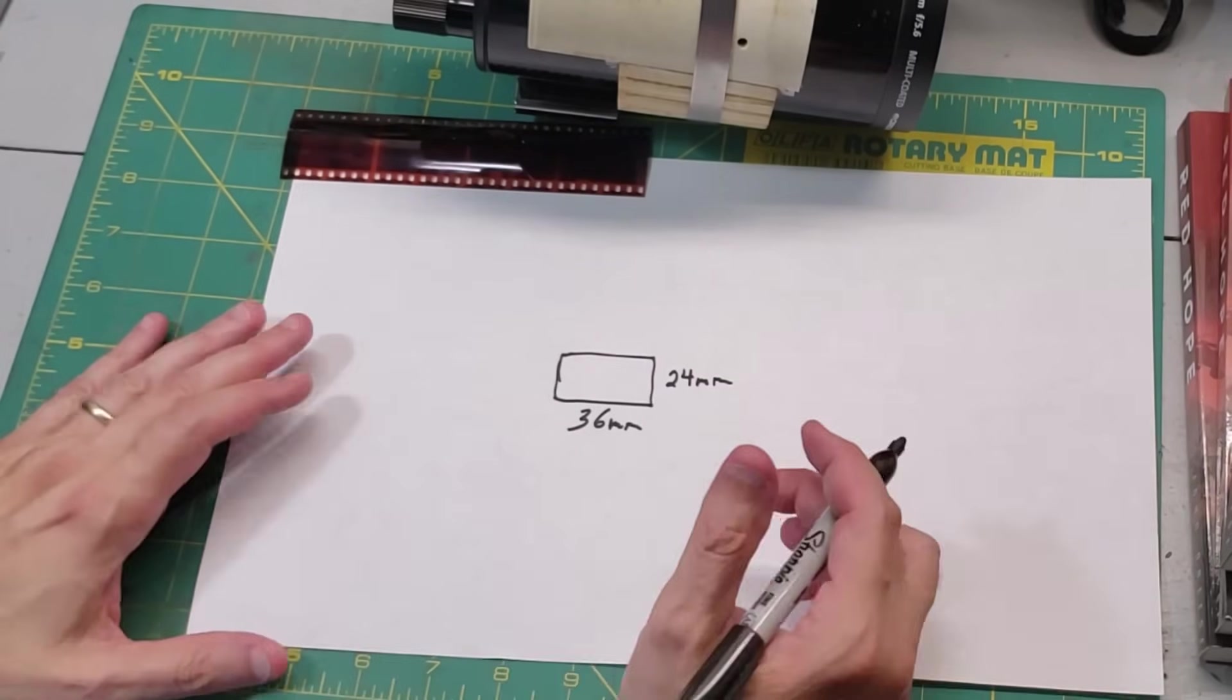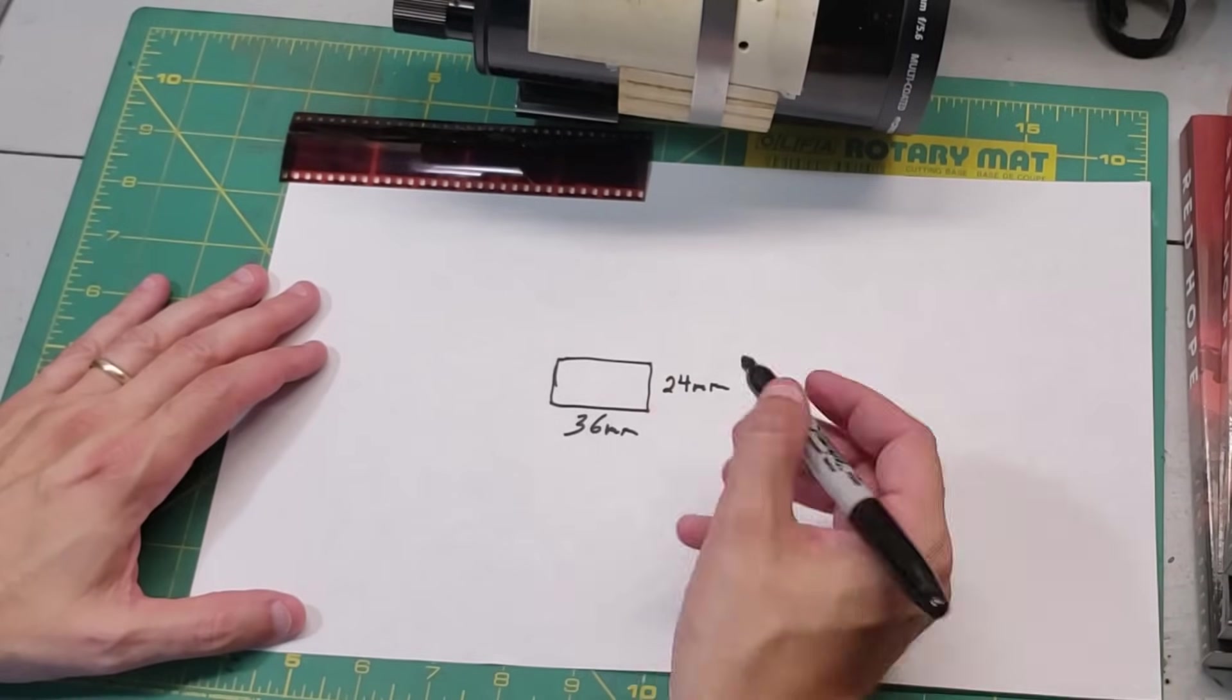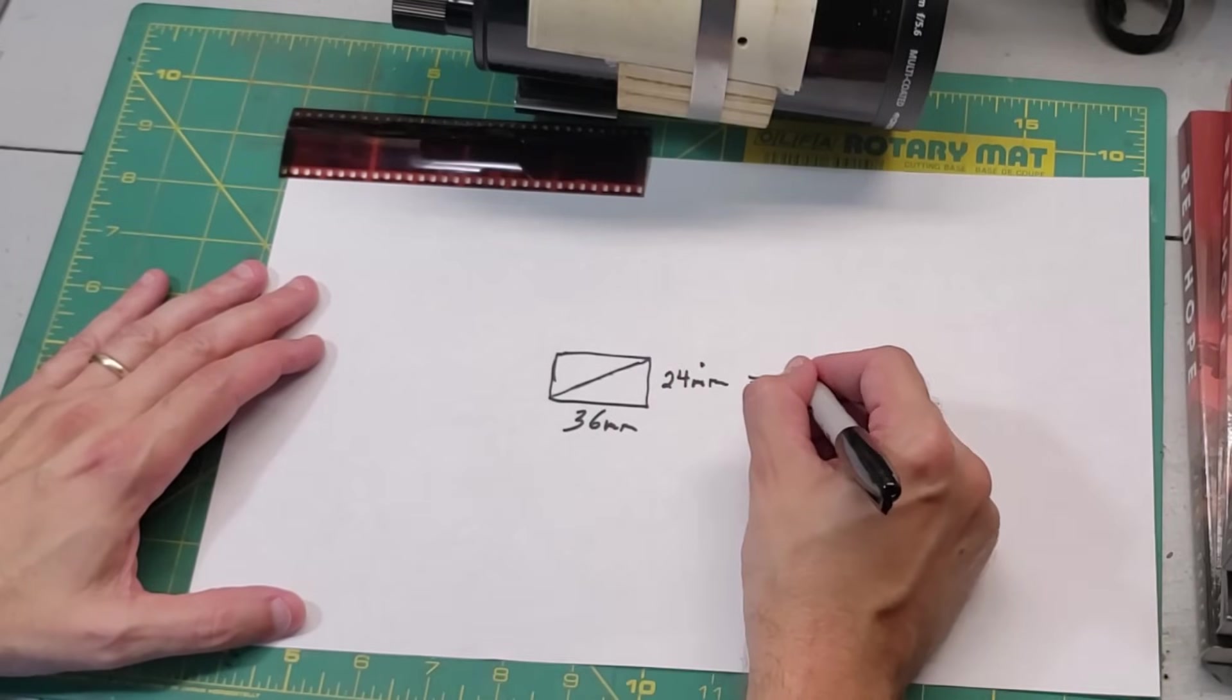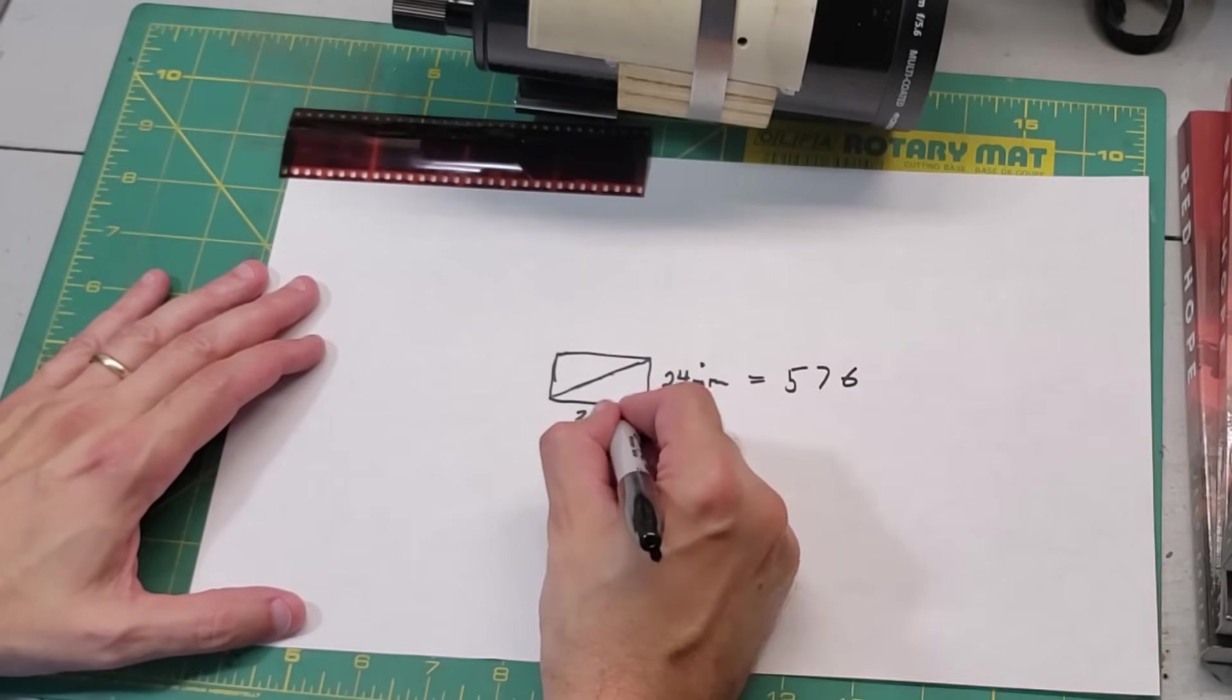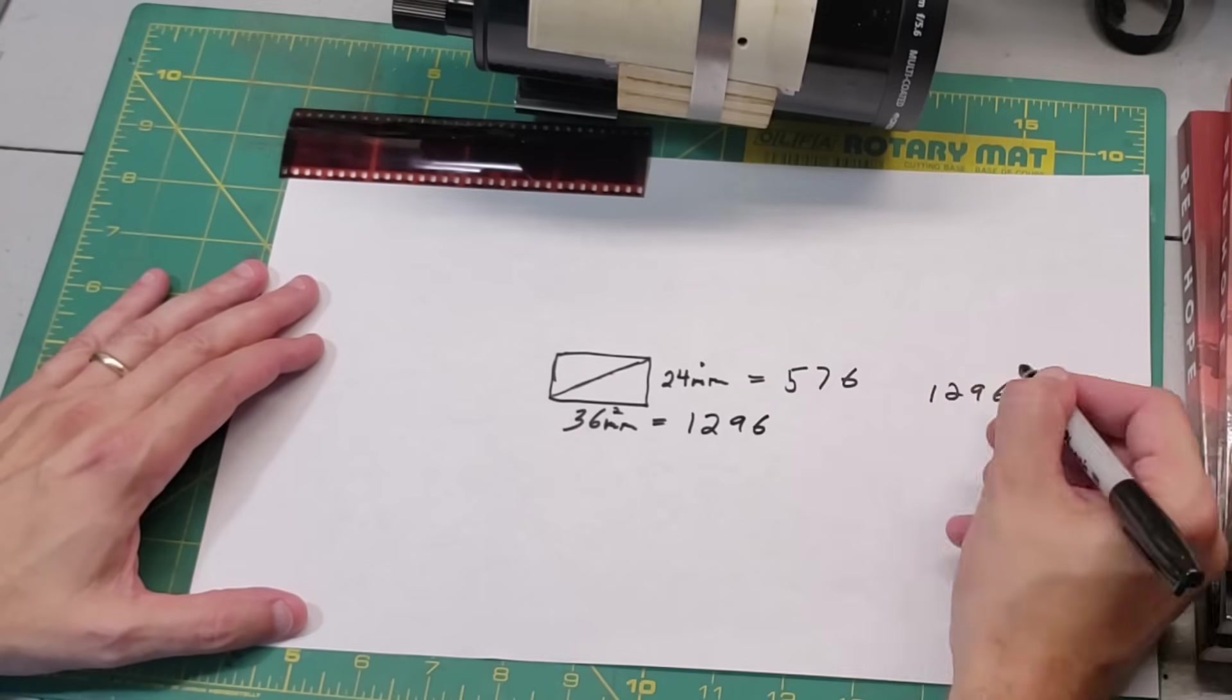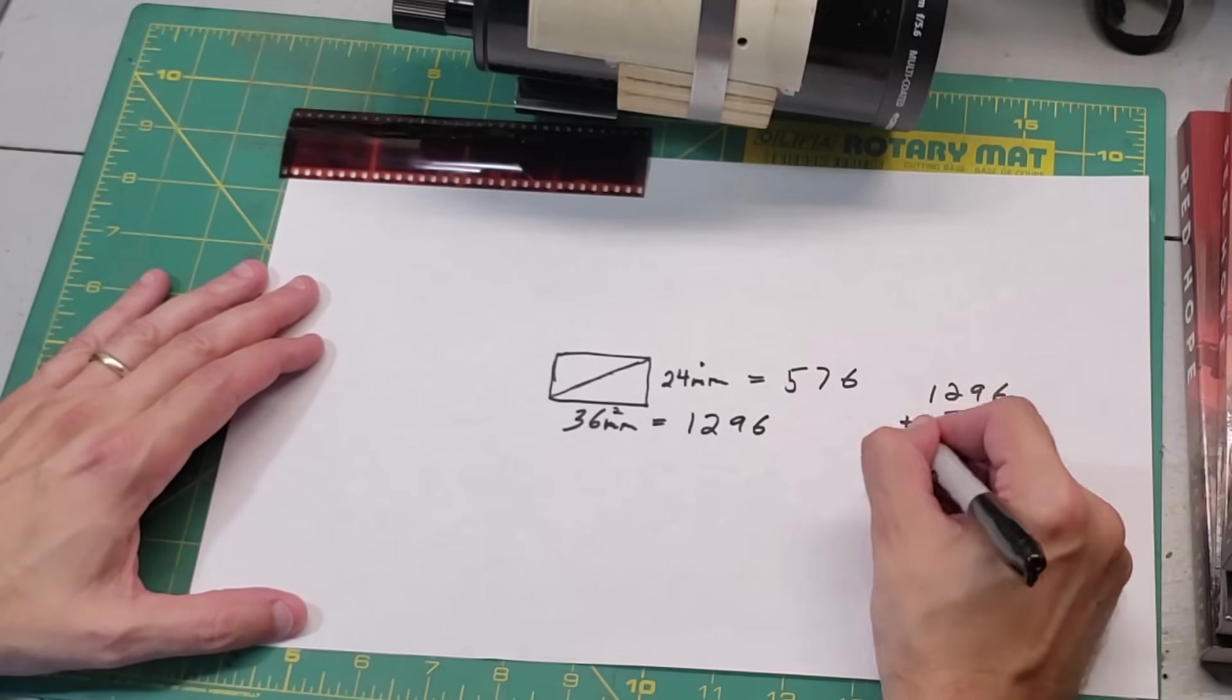And if I do my Pythagorean theorem right: 24 squared equals 576, 36 squared equals 1296. Add these up, and we get 1,872.